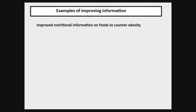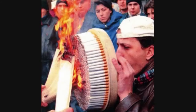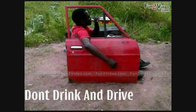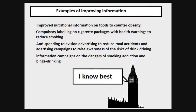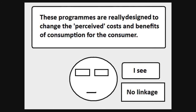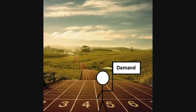Examples of this might include improved nutritional information on foods to counter the risk of growing obesity, compulsory labelling on cigarette packages and health warnings to reduce smoking, anti-speeding television advertisements to reduce road accidents, advertising campaigns to raise awareness of the risks of drink driving, and information campaigns on the dangers of smoking addiction and binge drinking. These programmes are designed to change the perceived costs and benefits of consumption for the consumer. They don't have any direct effect on market prices, but they seek to influence demand, and therefore output and consumption in the long run.